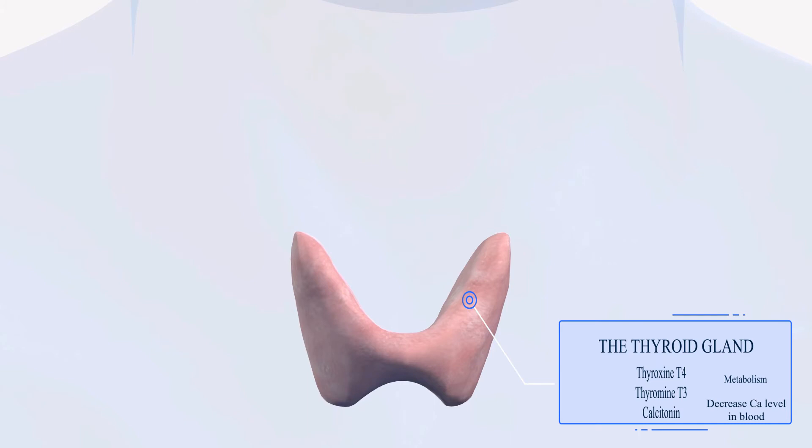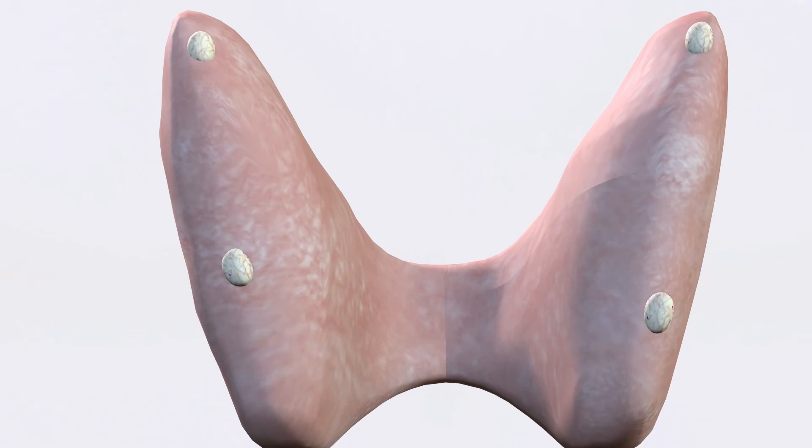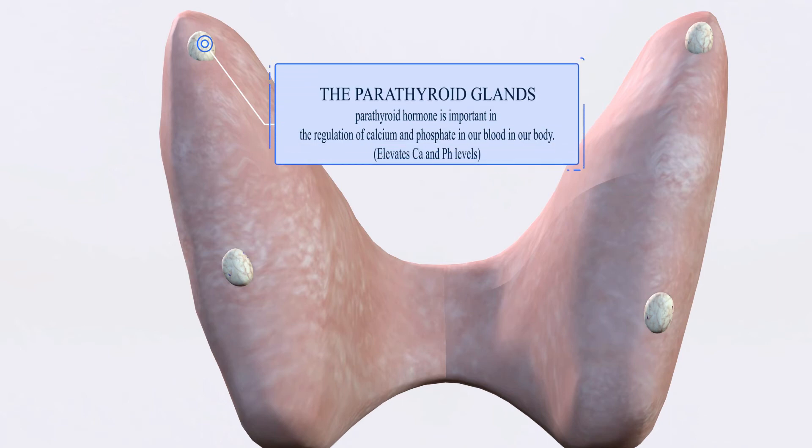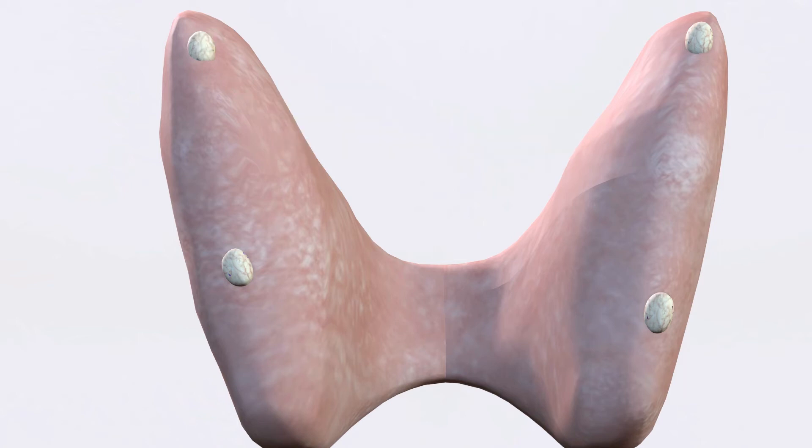Now the thyroid gland also has another endocrine glands on it. So if we zoom into this area here, we're looking at this person from posterior point of view from the back. So we have the thyroid gland and then we have these four sort of lobes on the thyroid gland. These are known as the parathyroid glands. So there are four parathyroid glands and these are behind the thyroid gland and they secrete the parathyroid hormone. Parathyroid hormone is important in the regulation of calcium and phosphate in our blood in our body. It elevates calcium and phosphate opposite to the action of calcitonin secreted by thyroid gland.